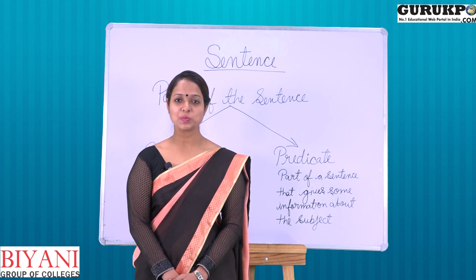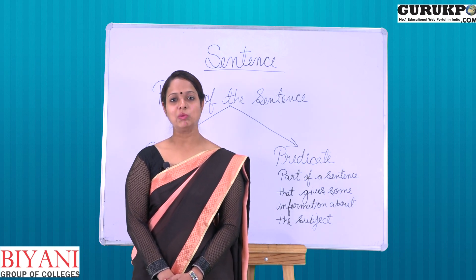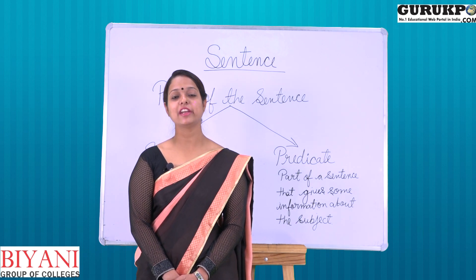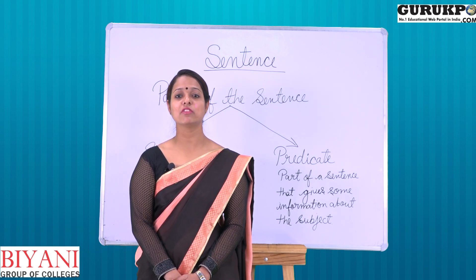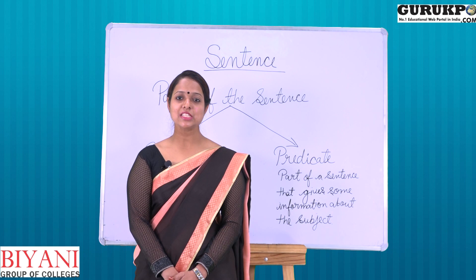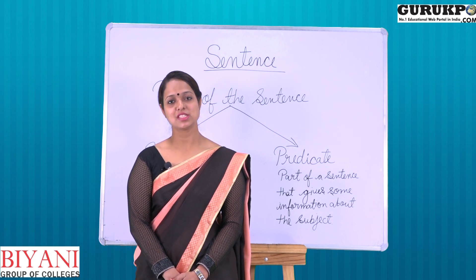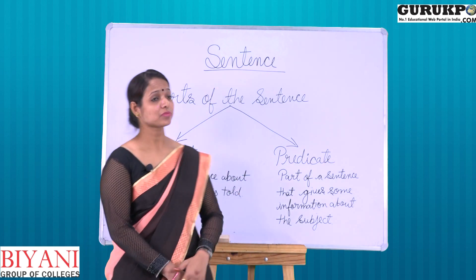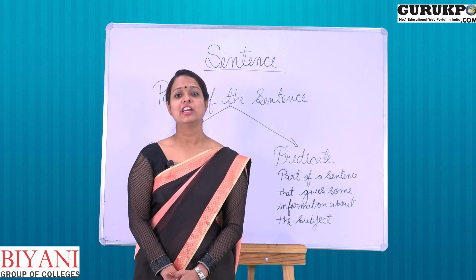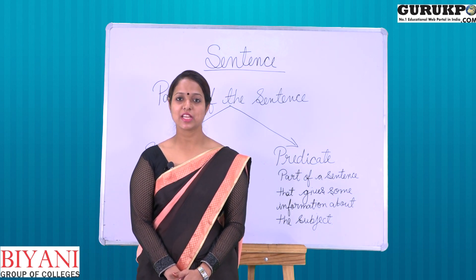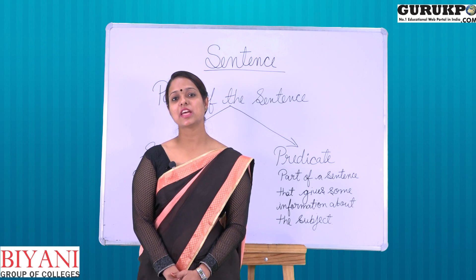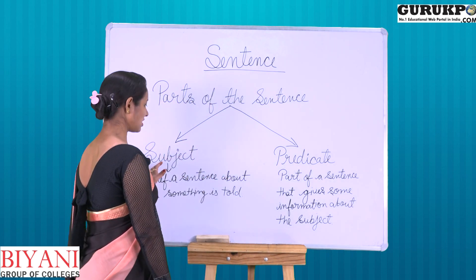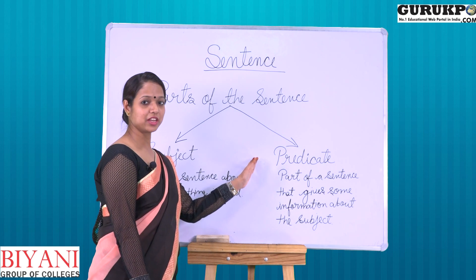When we speak, when we communicate with each other, we use different kinds of words and different kinds of groups of words. These groups of words are known as a sentence. A sentence is a group of words which has a complete sense, and a sentence has two parts. The first one is subject and the second one is predicate.